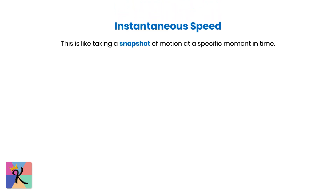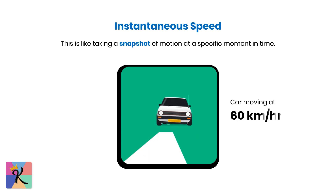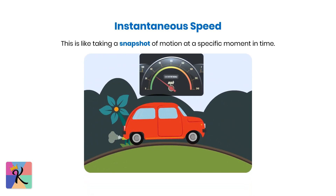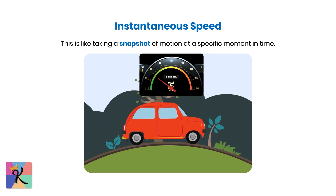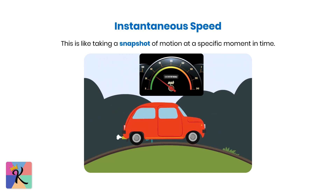Let's start with instantaneous speed. This is like taking a snapshot of motion at a specific moment in time. It tells us exactly how fast an object is moving right now, giving us a precise picture of its speed at that particular instant. For example, if you check the speedometer of a car or glance at your running watch, you're seeing your instantaneous speed — how fast you're going at that exact moment.